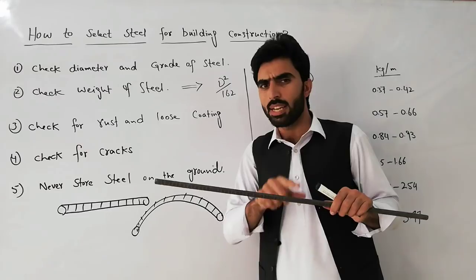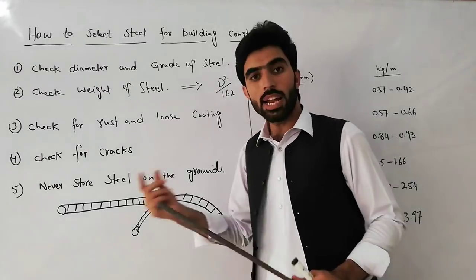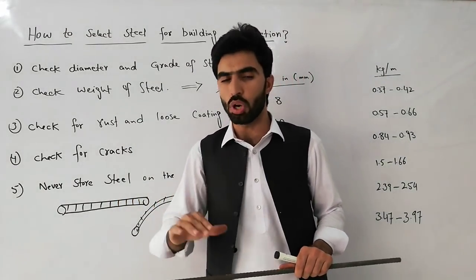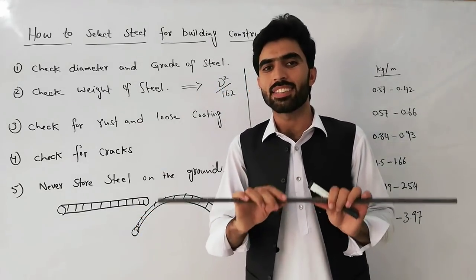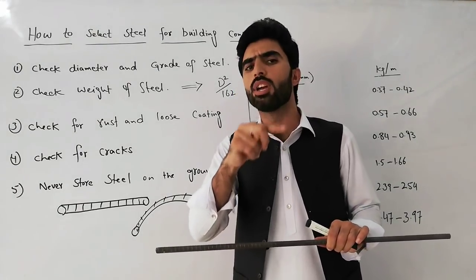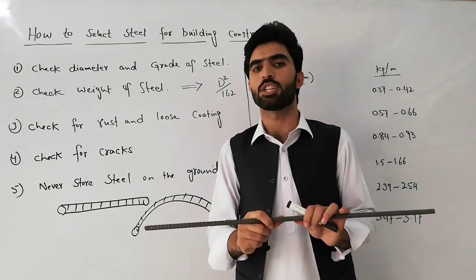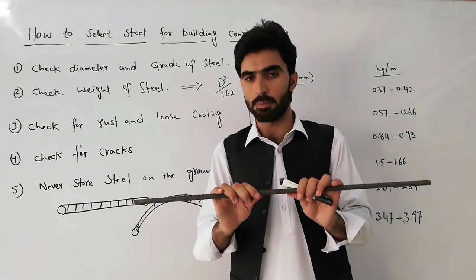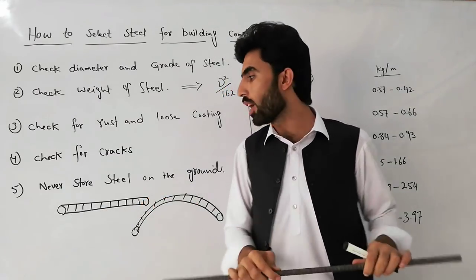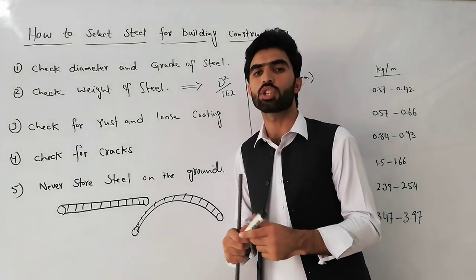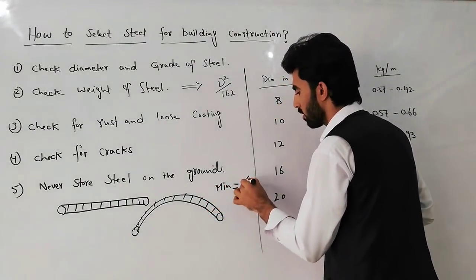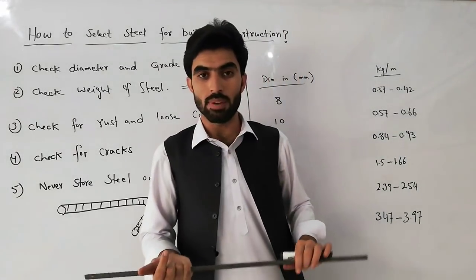The fifth point is to never store steel on the ground. Sometimes we place and store steel on the ground, which causes it to rust. Rusted steel should not be used in building construction, as rust weakens the strength of steel. If you want to store steel, it should be raised a minimum of four inches off the ground.